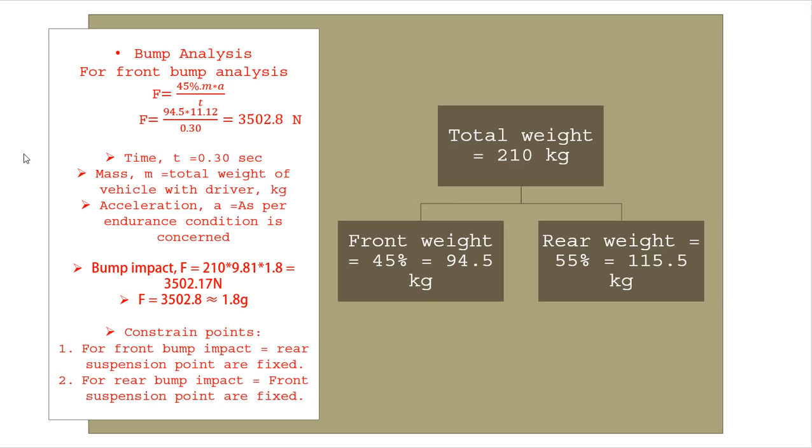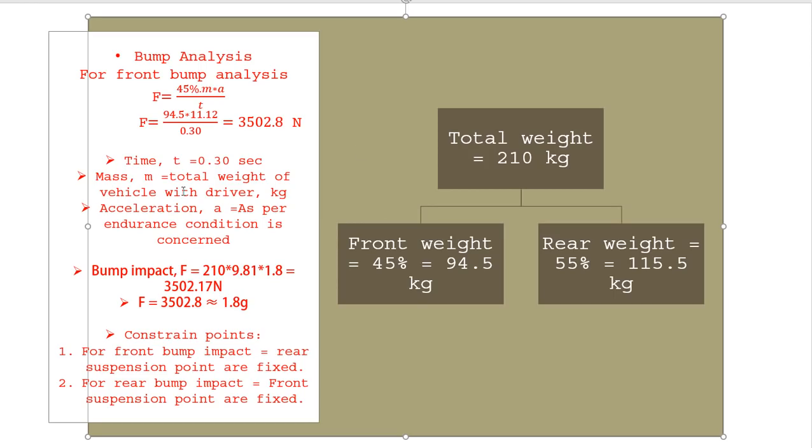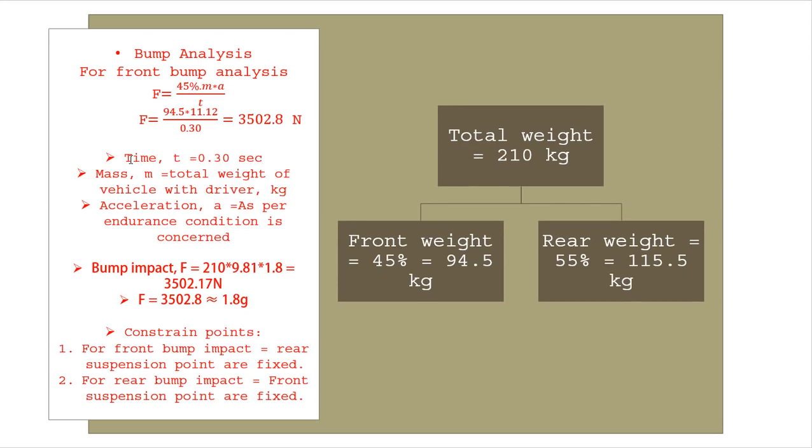After this, bump analysis. While doing bump analysis, same: we consider for front bump analysis 45 percent of weight times acceleration upon time of impact 0.3 seconds. We'll get front bump force of 3502.8 Newtons in our case. Don't take directly these values - put your vehicle values. Bump will be 1.8g, generally around 1.5 to 2g. Constraint points: for front bump impact, rear suspension points are fixed; for rear bump, front suspension points are fixed.